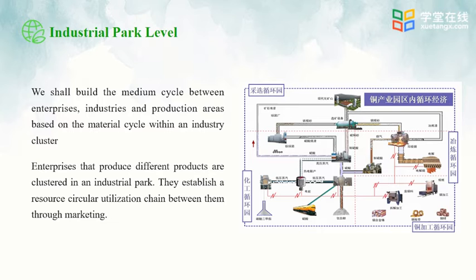Many enterprises that can exchange materials are clustered together. The wastes and waste heat of one enterprise can be utilized by another. By recycling others' waste, the overall emission of pollutants in the park is reduced. This is what we call circulation at the industrial park level.